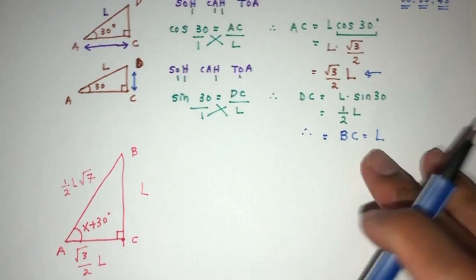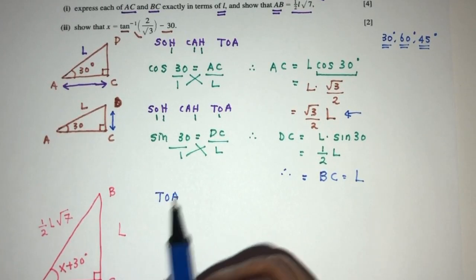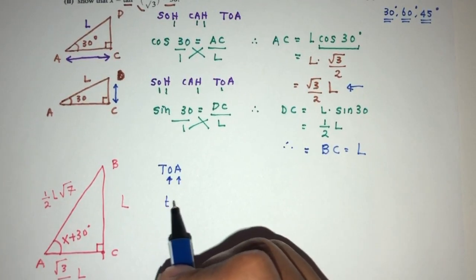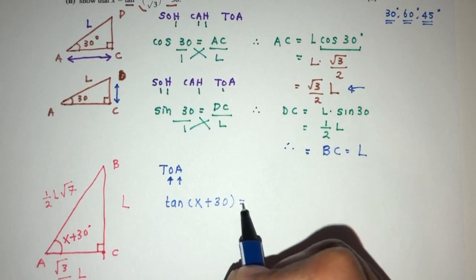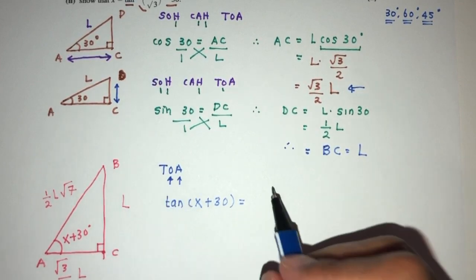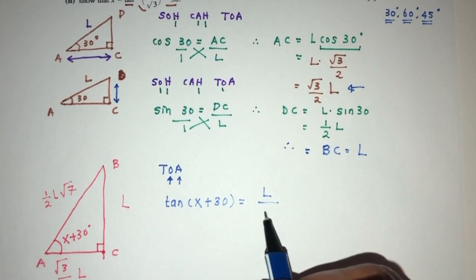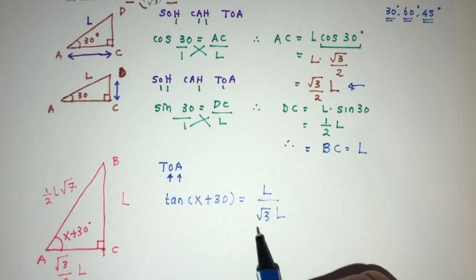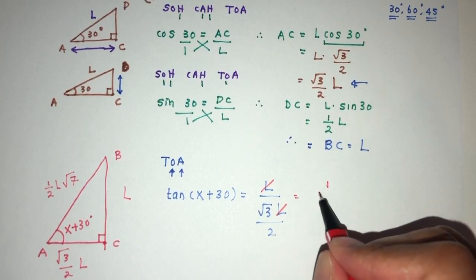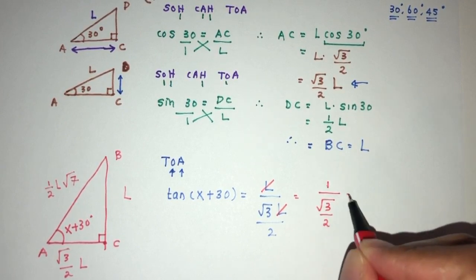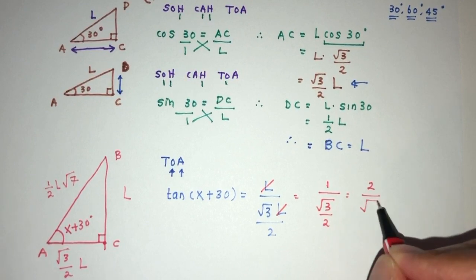Because we have tan, we understand tan is TOA. We need opposite side over adjacent side. So tan of the angle x plus 30 has to be the opposite side, which is L, over the adjacent side, which is root 3 L over 2. This and this will cancel out, so you will have 1 over root 3 over 2, which is the same as 2 over root 3.